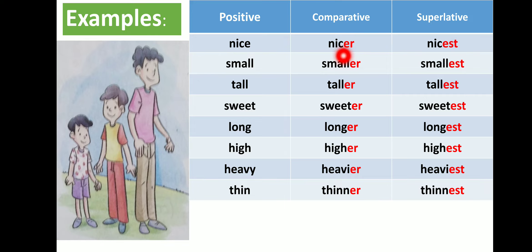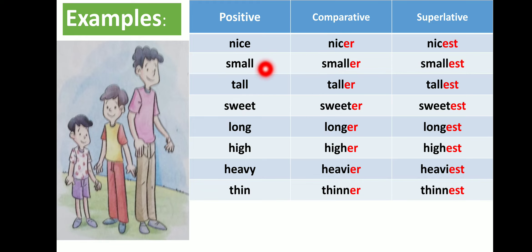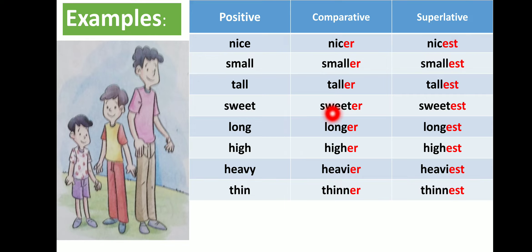Now, how to do the exercise: if comparative is given as 'nicer', positive is 'nice' and superlative is 'nicest'. If comparative is 'smaller', positive is 'small' and superlative is 'smallest'. If positive is 'sweet', comparative is 'sweeter' and superlative is 'sweetest'. I hope you understand.